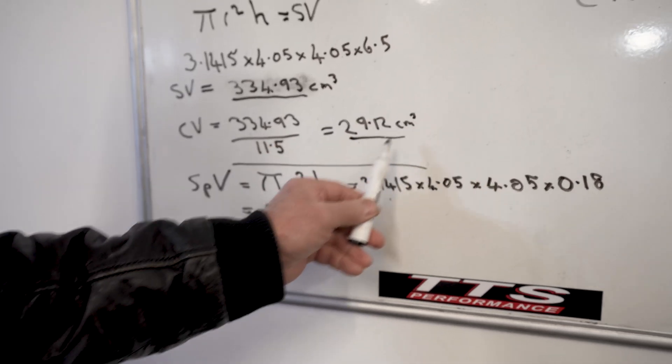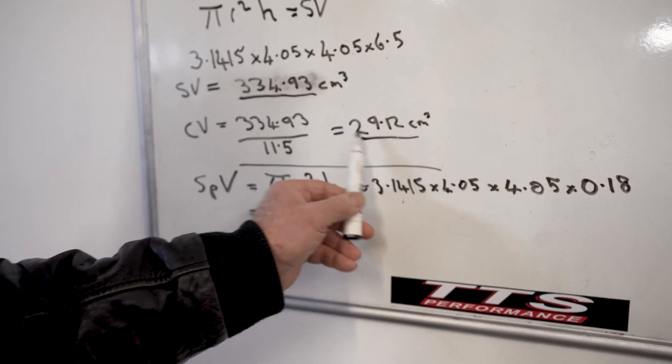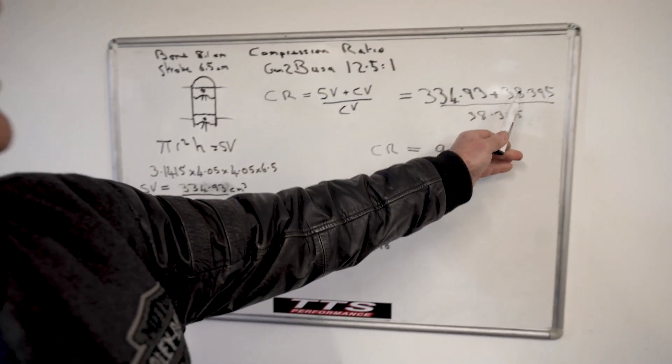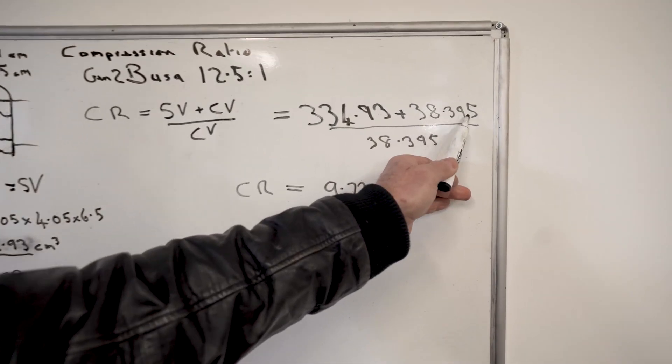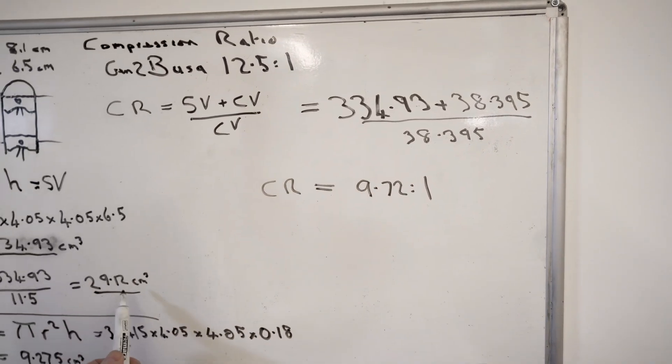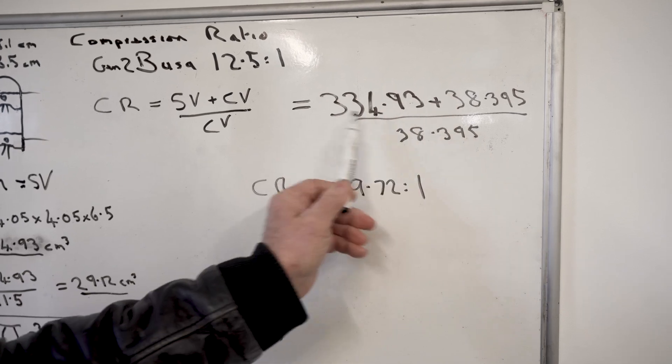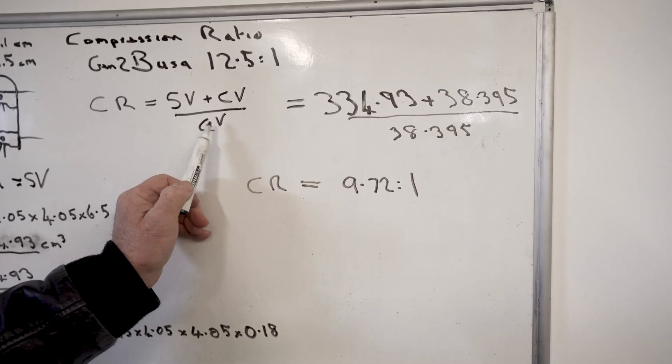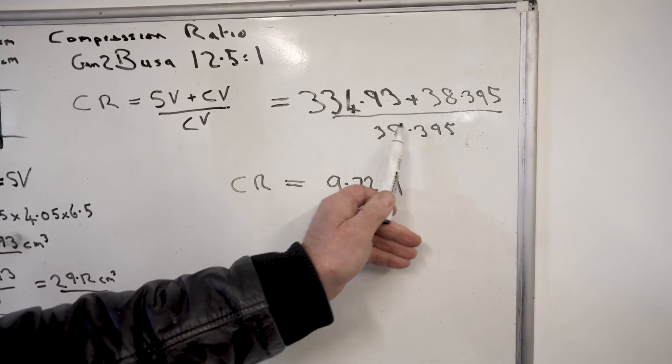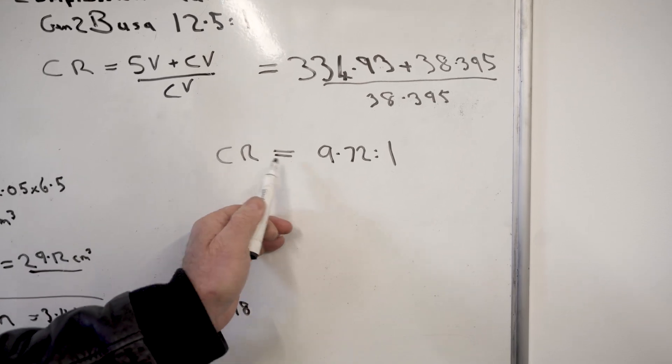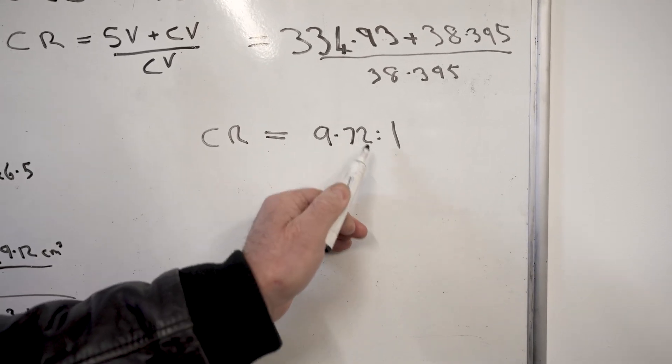So it was that, it is now that plus that. So that plus that is your 38.395, which is your compressed volume now because it's gone up from the 29.12. That's your swept volume. So, swept volume plus compressed volume divided by compressed volume: you've got 334 plus 38 divided by 38, so your compression ratio comes out at 9.72 to 1.